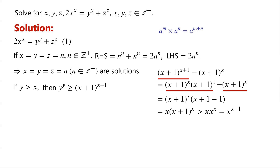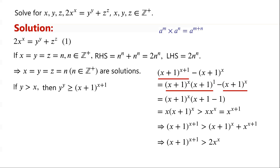Rearranging the inequality, we have (x+1)^(x+1) is greater than (x+1)^x plus x^(x+1). Since (x+1)^x is greater than x^x, and x^(x+1) is greater than x^x, we have (x+1)^(x+1) is greater than 2 times x^x. Therefore, y to the power of y is greater than 2 times x to the power of x.